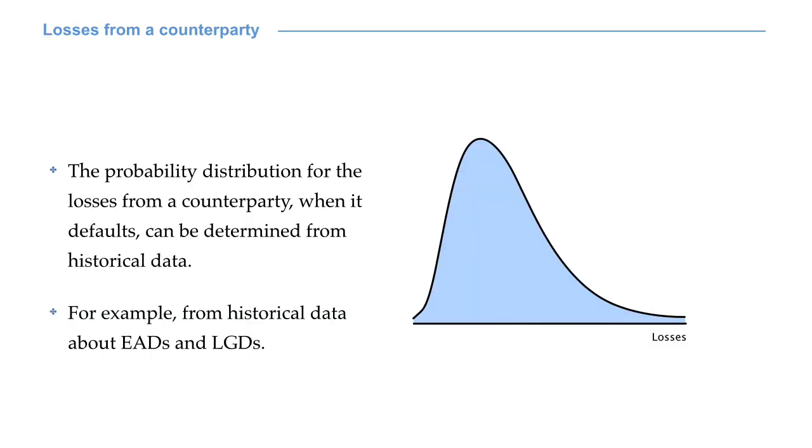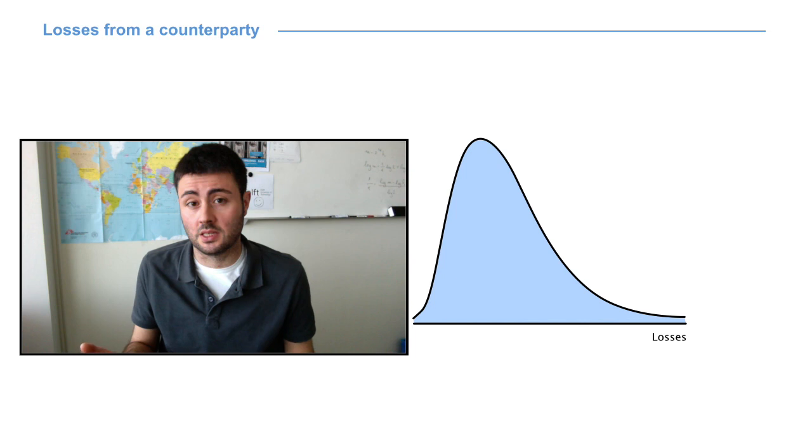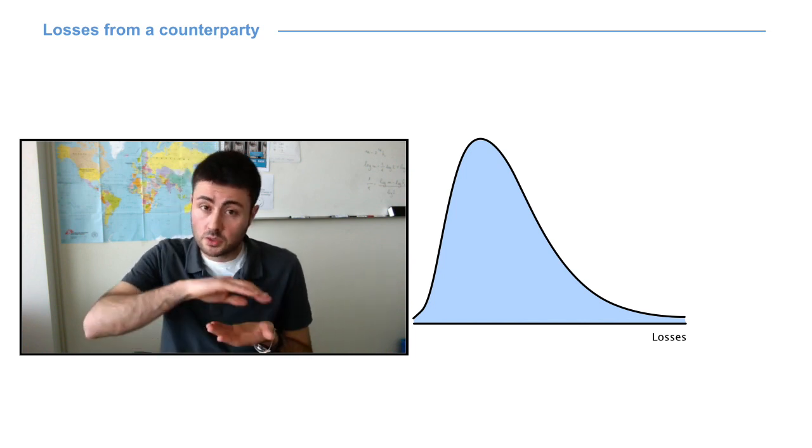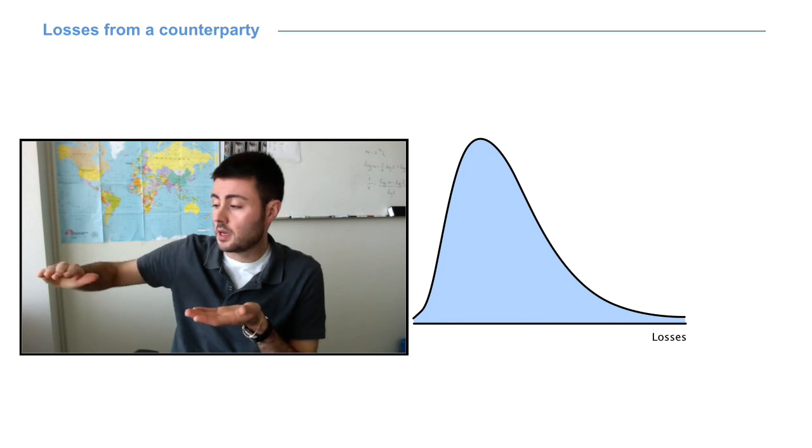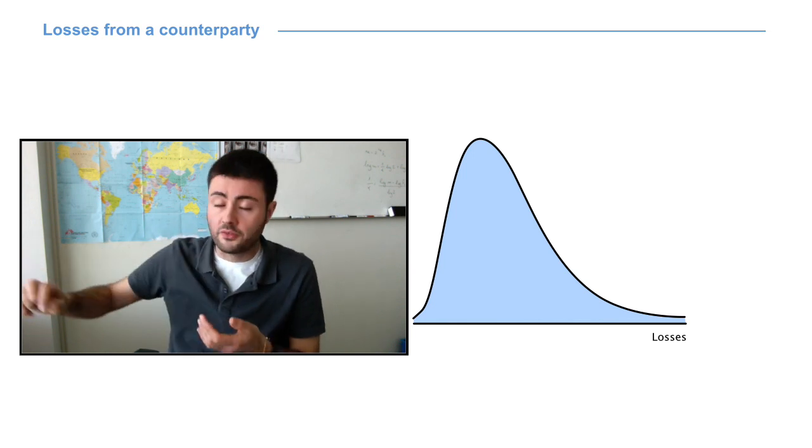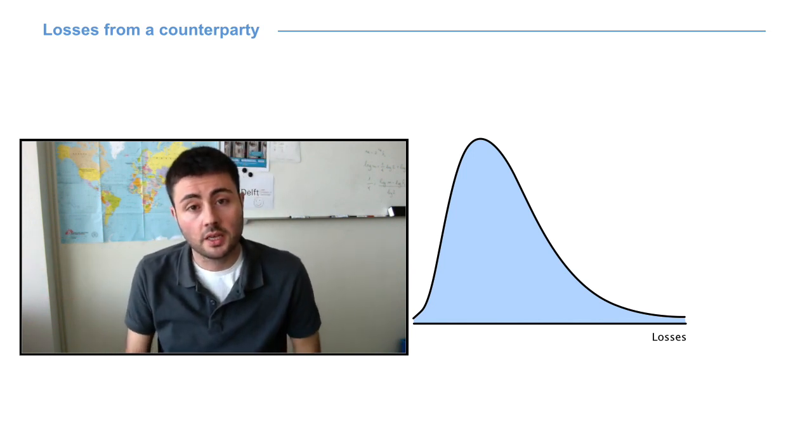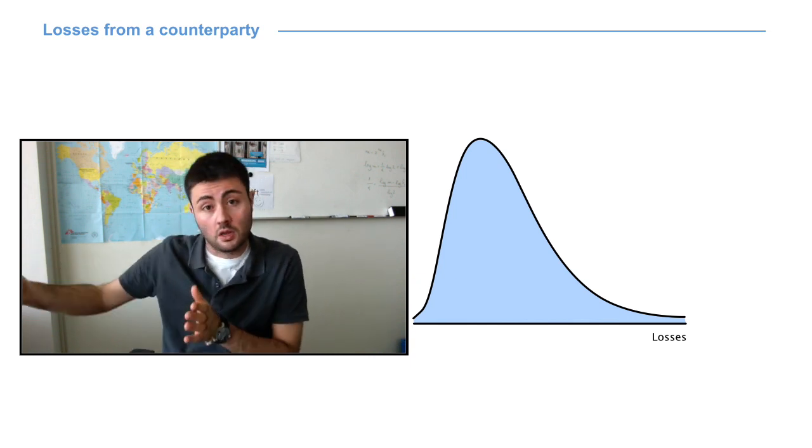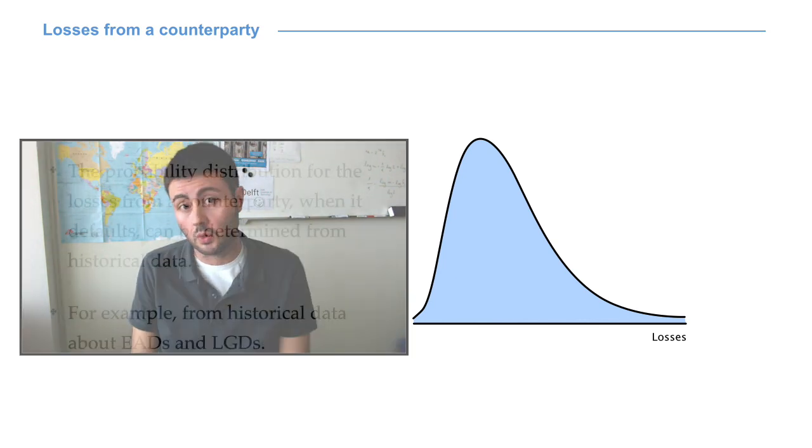The everyday business life and empirical studies show that the distribution of losses is typically skewed with a long fat right tail indicating that the probability of observing large losses, extreme losses, is not that small.